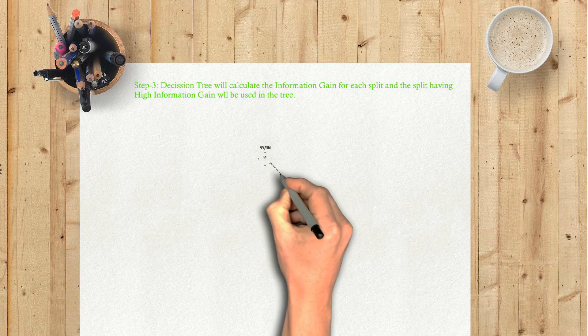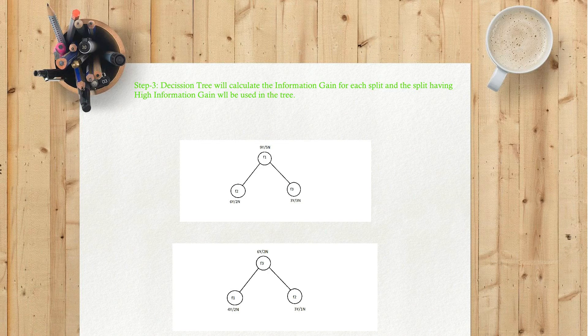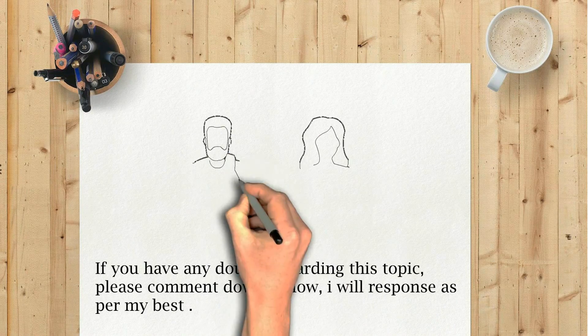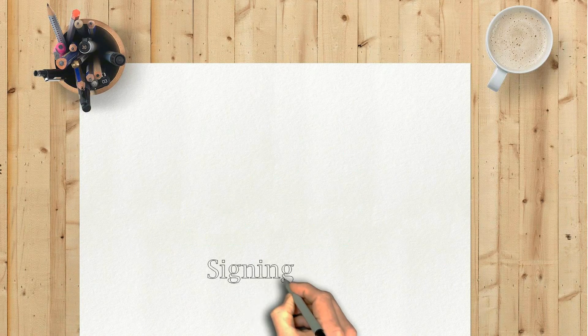Step 3: The decision tree will calculate the information gain for each split, and the split having high information gain will be used in the tree. If you have any doubts regarding this topic, please comment down below. I will respond as best I can. Signing out.